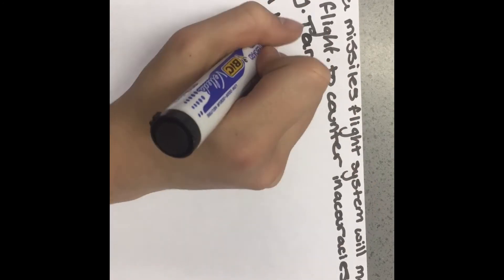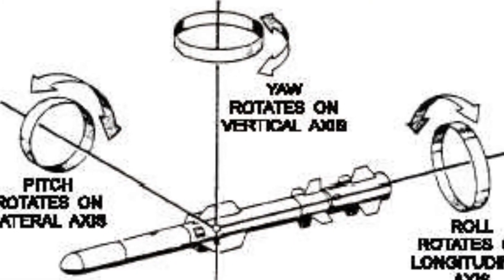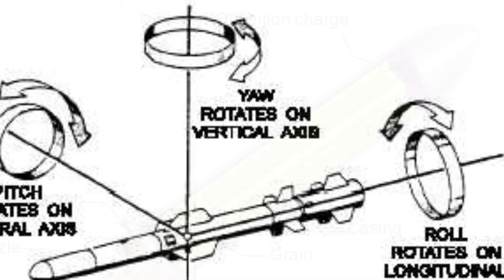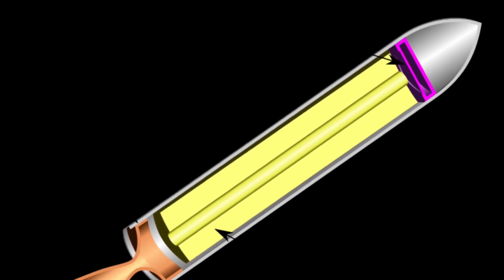This is done using vector thrust or by using wings or fins. Most missiles are powered by a rocket engine using solid fuel. Some long-range missiles use liquid propellant rockets.